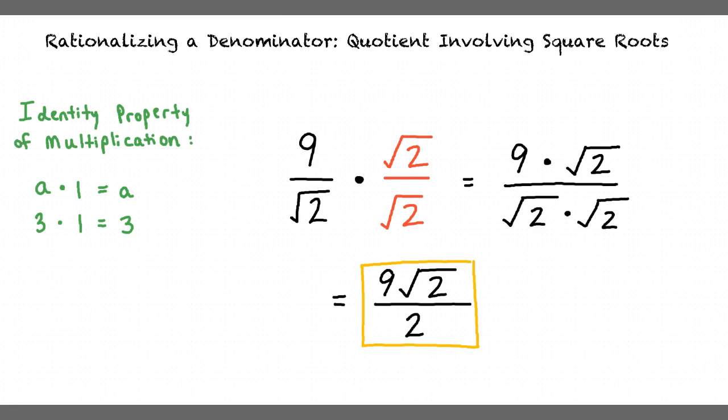After all of this, if the denominator is no longer a radical but is an integer instead, we've successfully rationalized our denominator. Yes, that's exactly right. Great work.